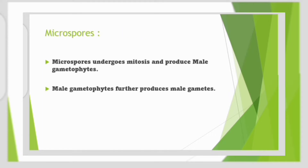What are Microspores? As the name indicates, they are smaller in size, and further they undergo mitosis and produce male gametophytes. These male gametophytes further form male gametes. In angiosperms, we call these male gametes as pollen grains, which consist of vegetative and generative cells.